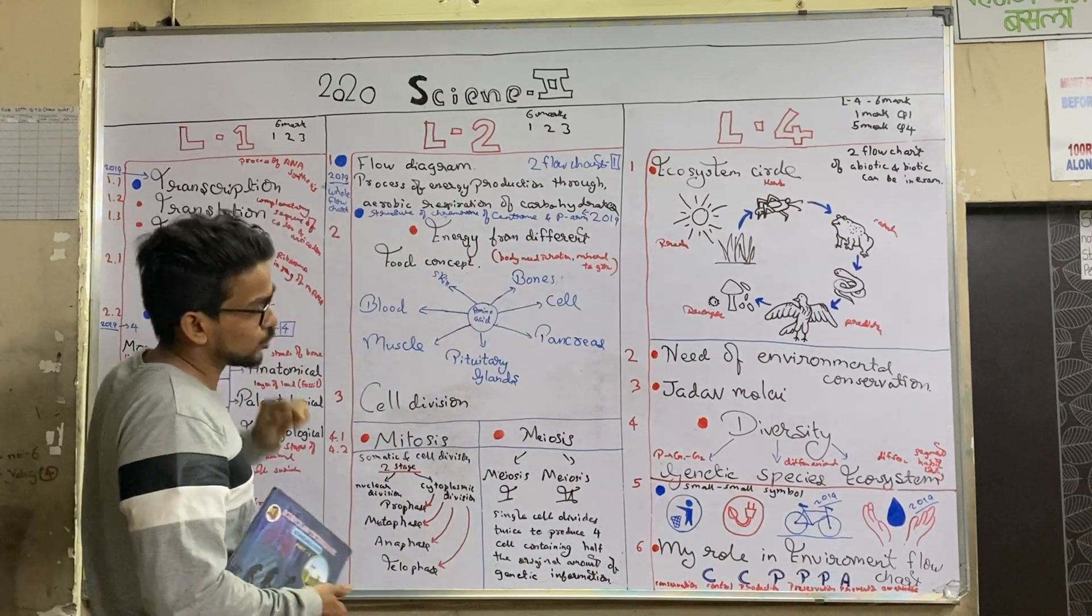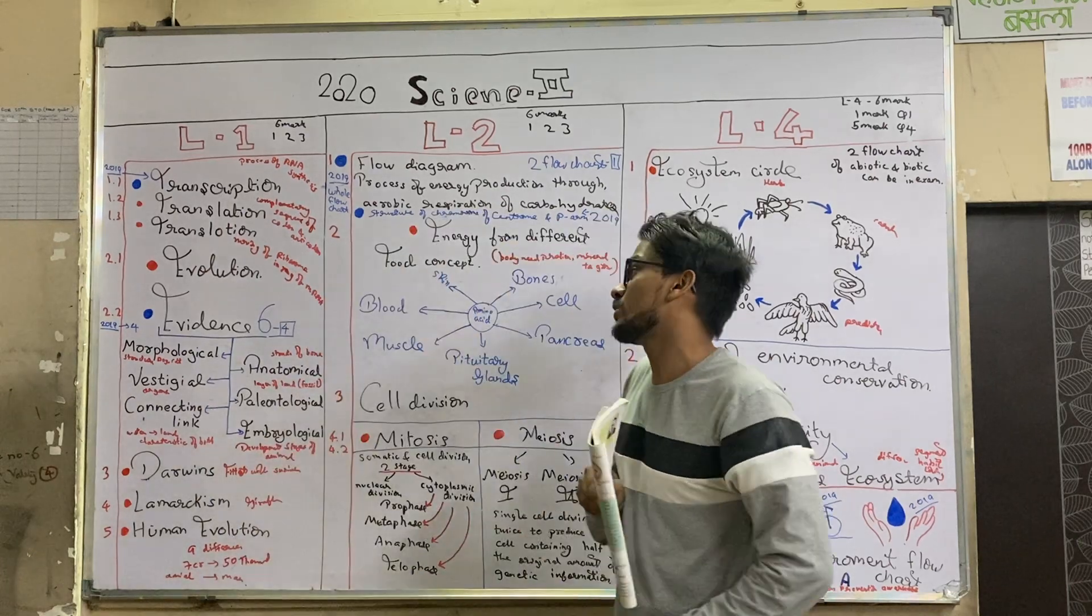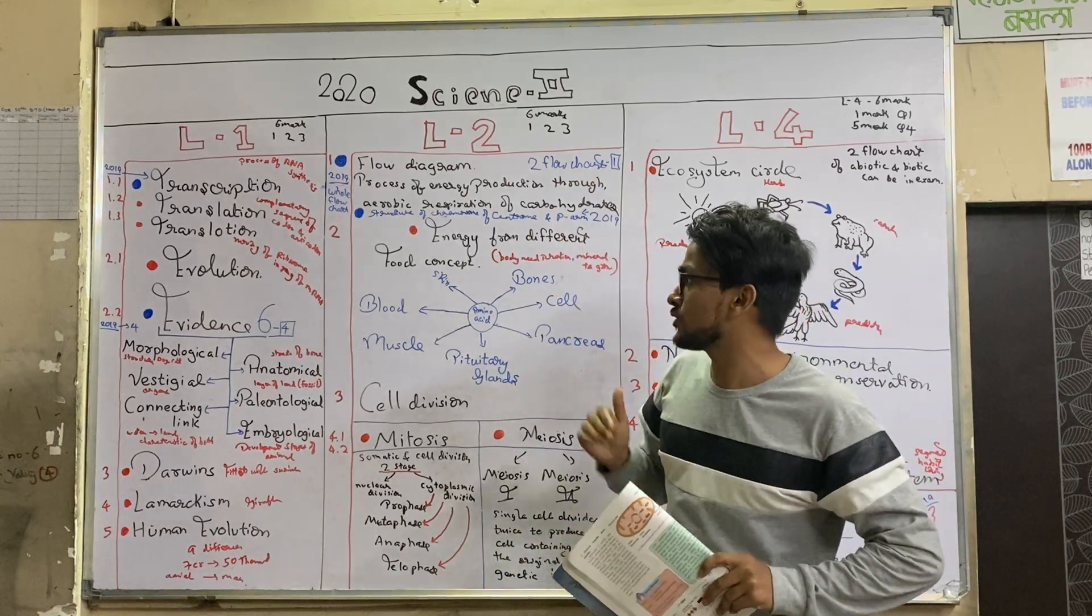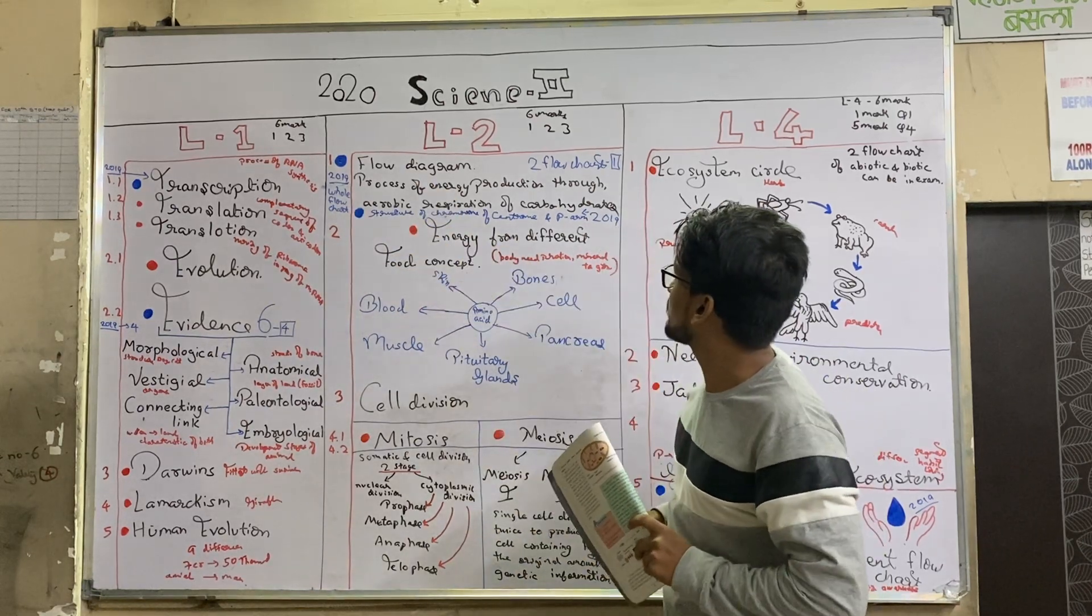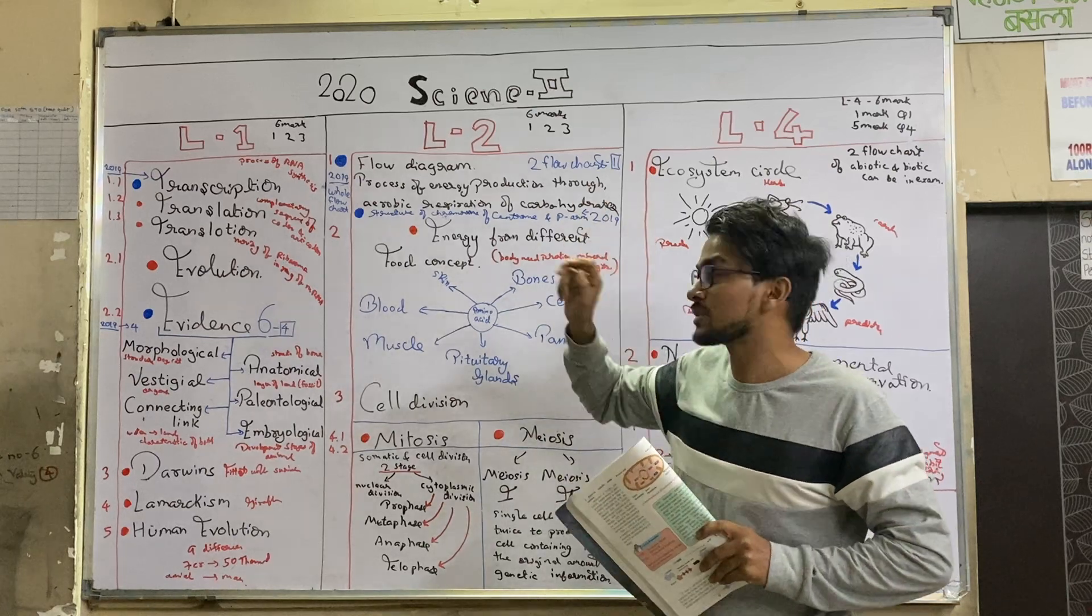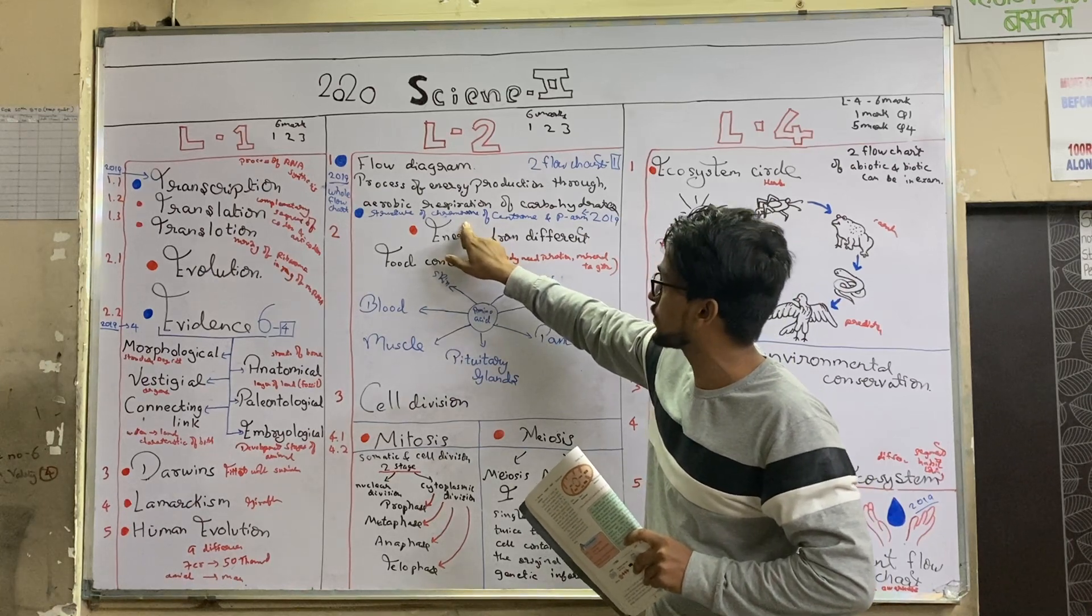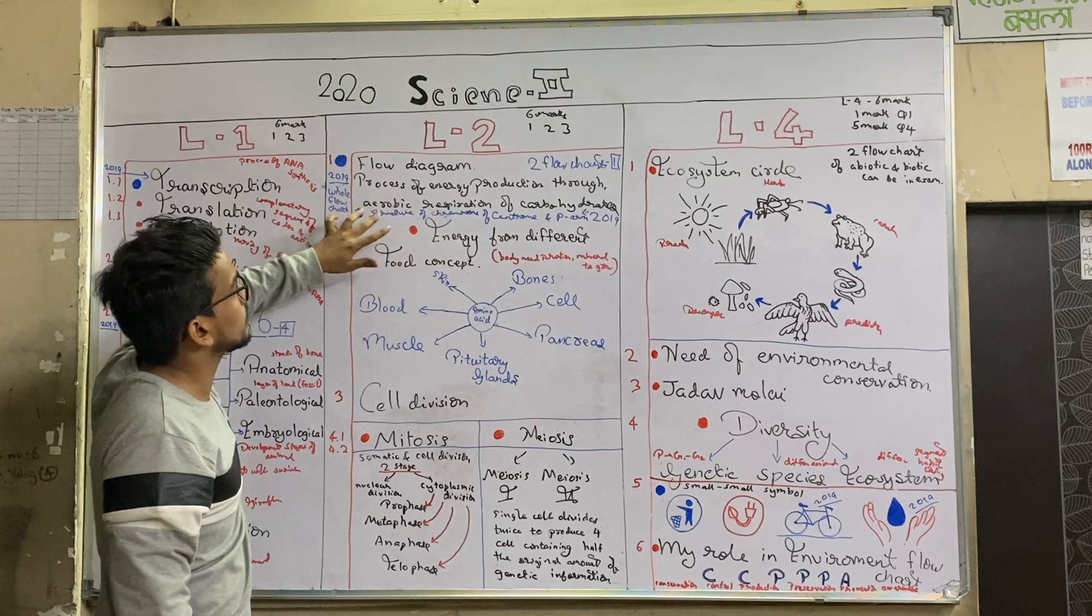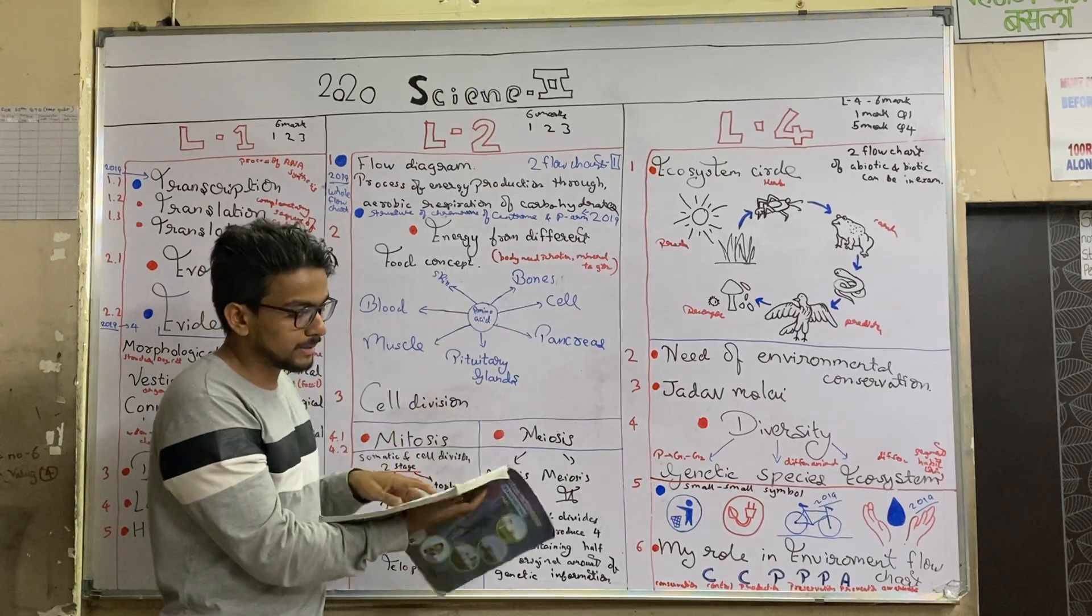Now let us start with lesson number 2. Before we begin, if you see the 3rd page of this lesson, this left side flow chart was asked in the exam. A blue tick means the question which came in last year's board exam in March. The process of energy production through anaerobic respiration of carbohydrate, and another question is the structure of the chromosome. These are two questions, one is of 2 marks, one is of 3 marks. So the probability in this lesson is that this one can come.